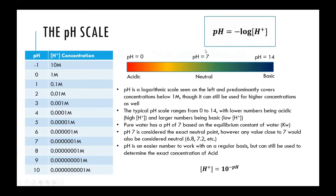A high pH value is a basic solution. Right in the middle at seven, a pH of 7 is a neutral solution — and this is the pH of water. If you were to measure pure water, it should give a pH of seven. If you measure tap water, it won't be exactly seven because there are always things dissolved in it, but pure water should be a neutral pH of seven.